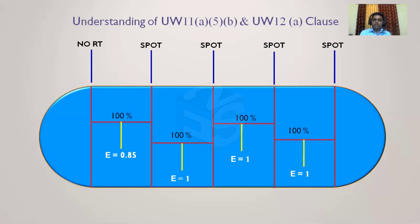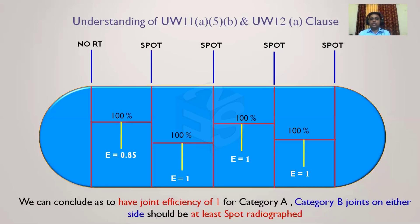Comparing the first and last examples: in the first, the shell-to-head junction is not radiographed on one side, so joint efficiency must be reduced from 1 to 0.85 even after doing 100% radiography for the cylinder. Conclusion: to have a joint efficiency of 1 for any category A joint, the category B joints on both sides must at least have spot radiography done. If this condition is not satisfied, E should not be considered as 1.